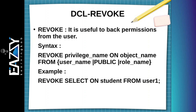For example, we gave SELECT privileges on the student table to user one. To remove that, we write: REVOKE SELECT ON student FROM user_one. These commands are used when we learn more about DCL and DML practically. I've just introduced you to the DCL commands — GRANT and REVOKE.